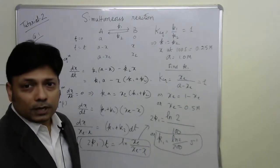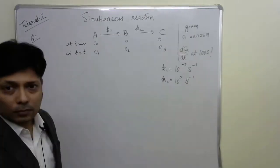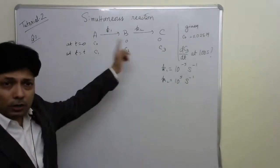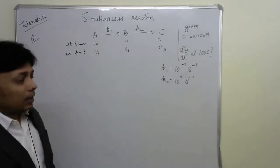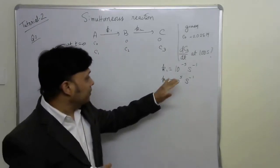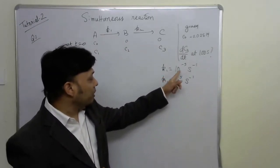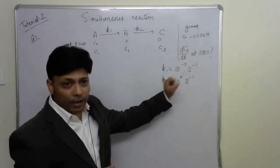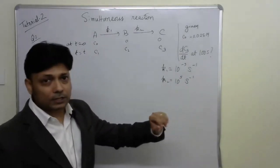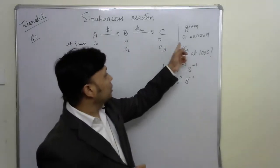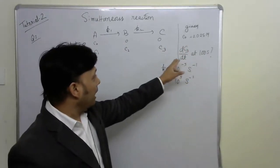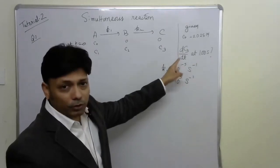Let's move on to problem number 2, which involves a consecutive reaction A→B→C. The rate constants are K1 equals 10^(−3.95) s⁻¹ and K2 equals 10^(3.95) s⁻¹ (note K1 much less than K2). The initial concentration C0 is 0.05 molar. We need to find dC3/dt at t equals 100 seconds.